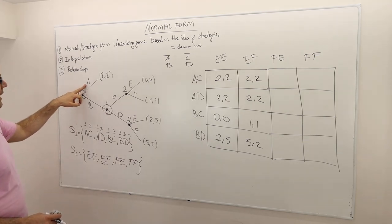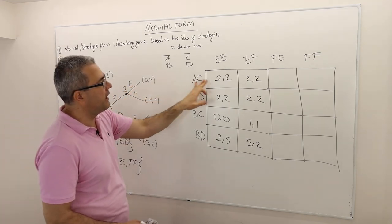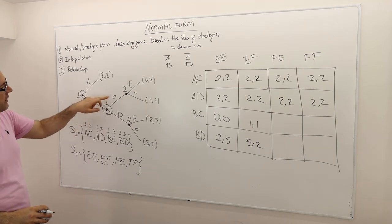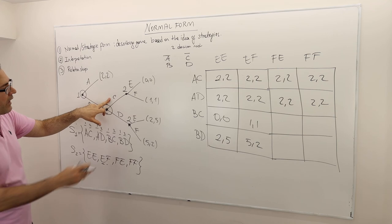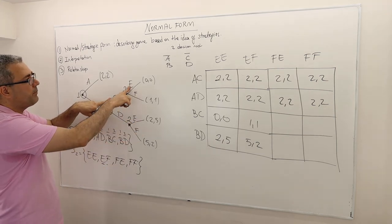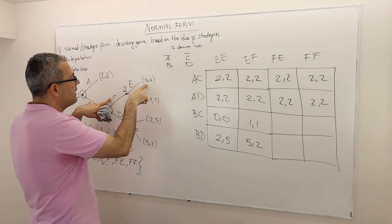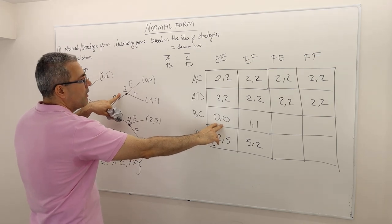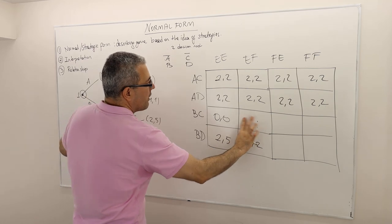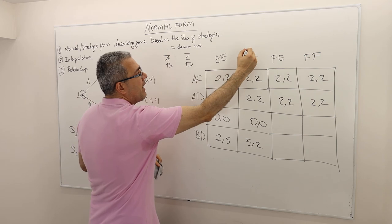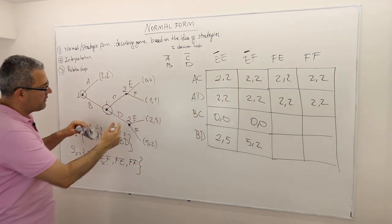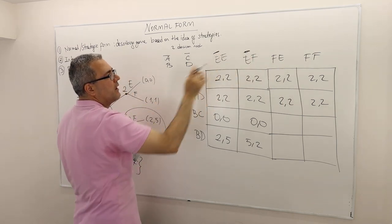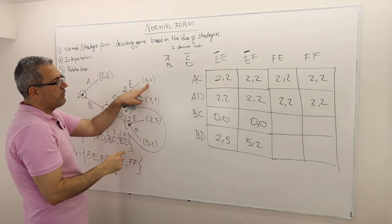Filling in the payoffs: whenever player one plays A, the game ends immediately, so the payoff is 2, 2 everywhere in the A rows, regardless of player two's strategy. For BC with E as the first component: EE or EF both give 0, 0, because only the first component matters here and the second part is not reached. When the first component is F: FE or FF give 1, 1.